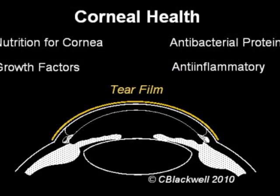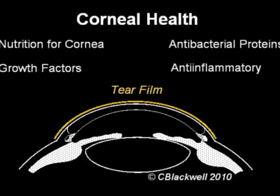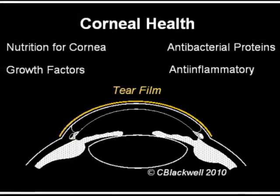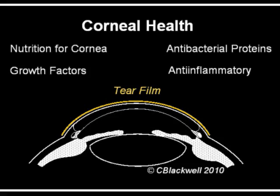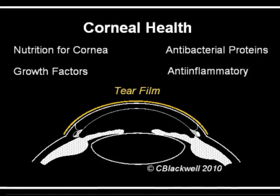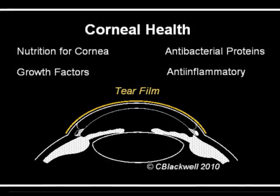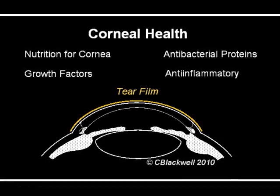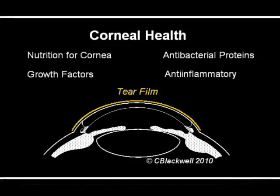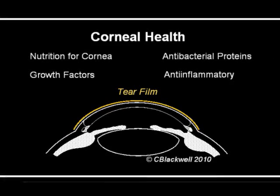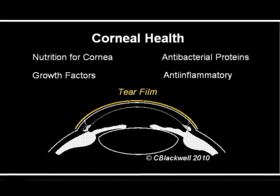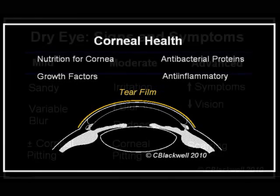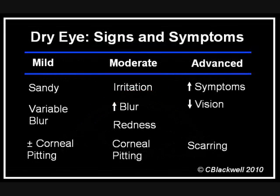Regarding comfort and corneal health, the tear film contains a number of substances that are important for the health of the surface of the eye. Consider that there are no blood vessels in the cornea, which means the living cells of the cornea depend on the tear film for their nutritional support. Tears contain, for example, electrolytes, growth factors, antibacterial proteins, suppressors of inflammation, and more.